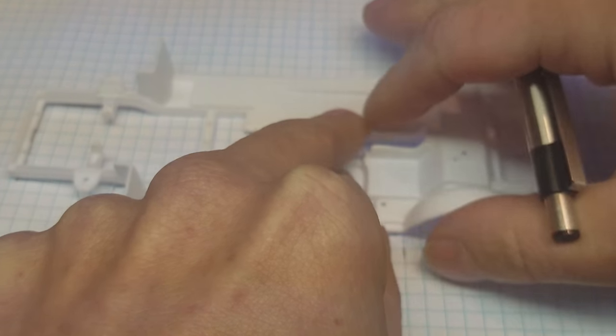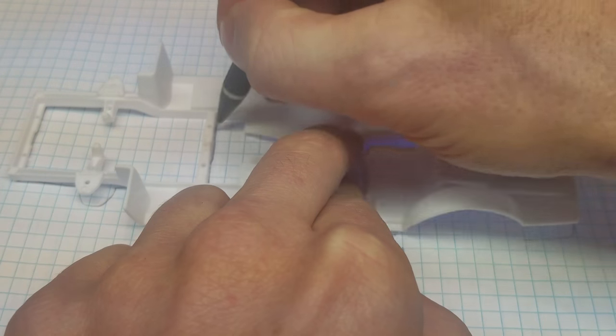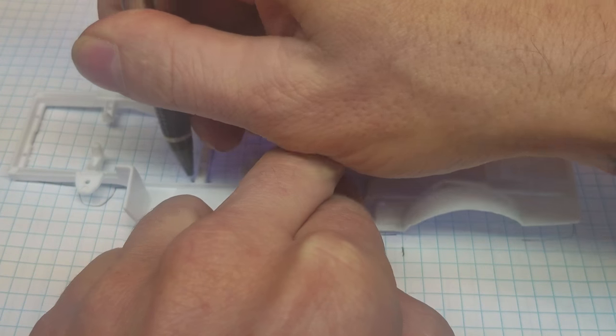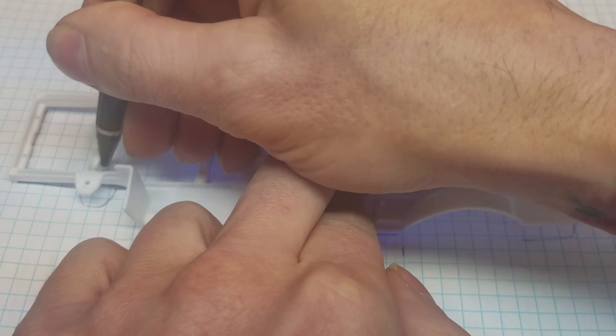So the next thing we need is we need this cross member. This cross member is what the motor sits on, and we need the inside of this frame rail.